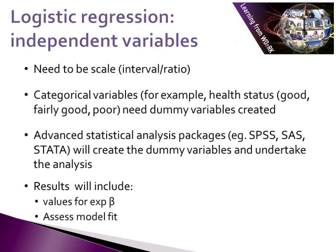For logistic regression, independent variables need to be scale — either interval or ratio. If we're going to use categorical variables, for example health status going from good to fairly good to poor, we need to create dummy variables as discussed before. Advanced statistical packages such as SPSS and Stata will actually create dummy variables and undertake the analysis for you. The results will include values for the exponential of beta for each of your variables, and will also assess the fit of the model.